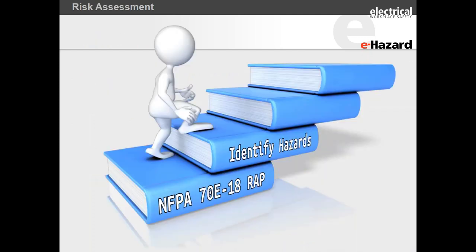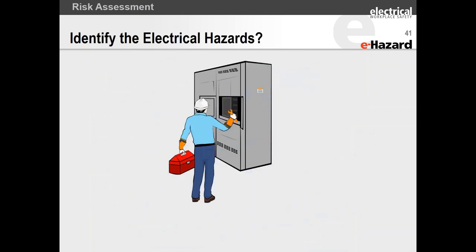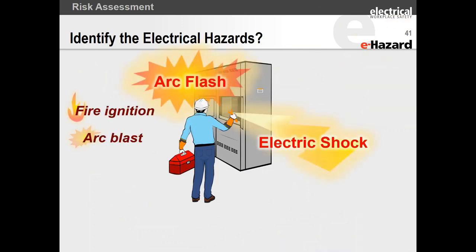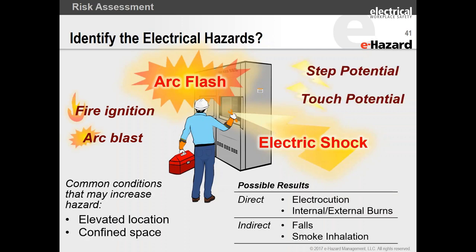Identification of hazards is so important. In a quality job plan and job briefing, you need to clearly identify the hazards: direct contact, touch potentials, shock potential — quantified and clearly documented for each specific task. In incident investigations when people get hurt, they often find that people didn't even really identify the hazards, which is step one in a risk assessment procedure.